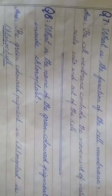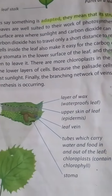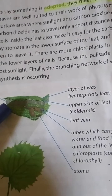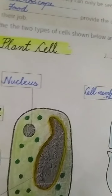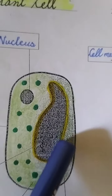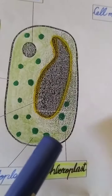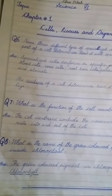Question number eight: what is the name of the green colored pigment inside the chloroplast? The answer is chlorophyll. In a leaf structure magnified under a microscope, all cells appear green due to chloroplast. These green colored chloroplasts contain the green pigment chlorophyll, which is very important because it performs photosynthesis and helps the plant make food.